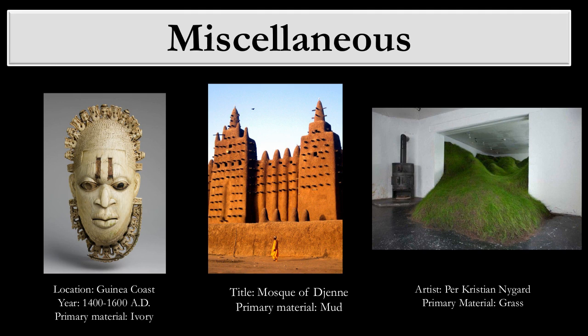Looking at miscellaneous examples: the head on the left is actually made of ivory. Nobody should be working with ivory right now — I think it's illegal, because you have to get it from elephants and rhinos. But it's a beautiful piece. Here we can take a look at this mosque, just made of mud and wood — really large with a beautiful surface. And there's a piece on the right using just grass, a living material. There are a lot of different natural materials that you as an artist can use.